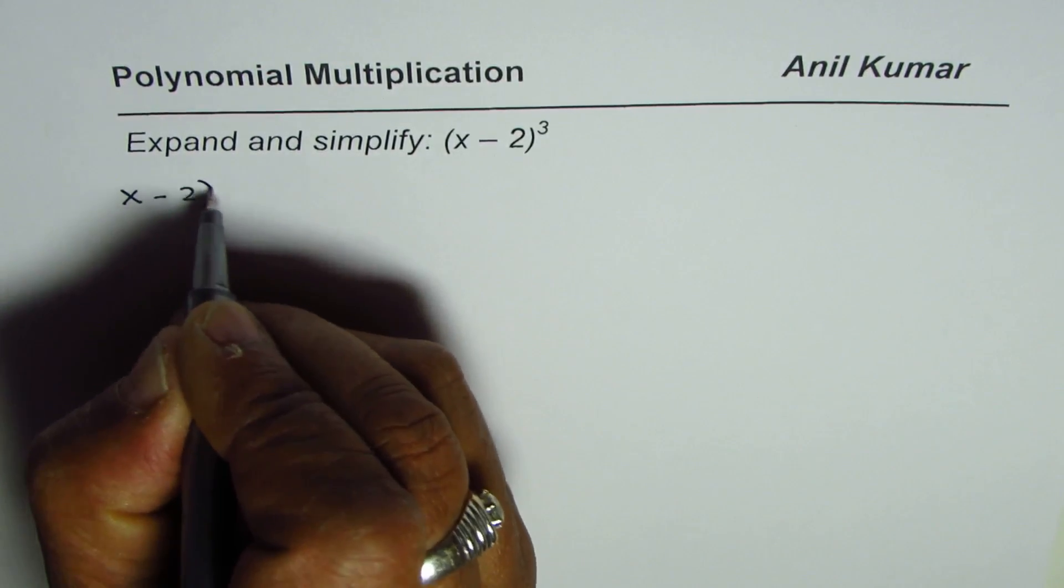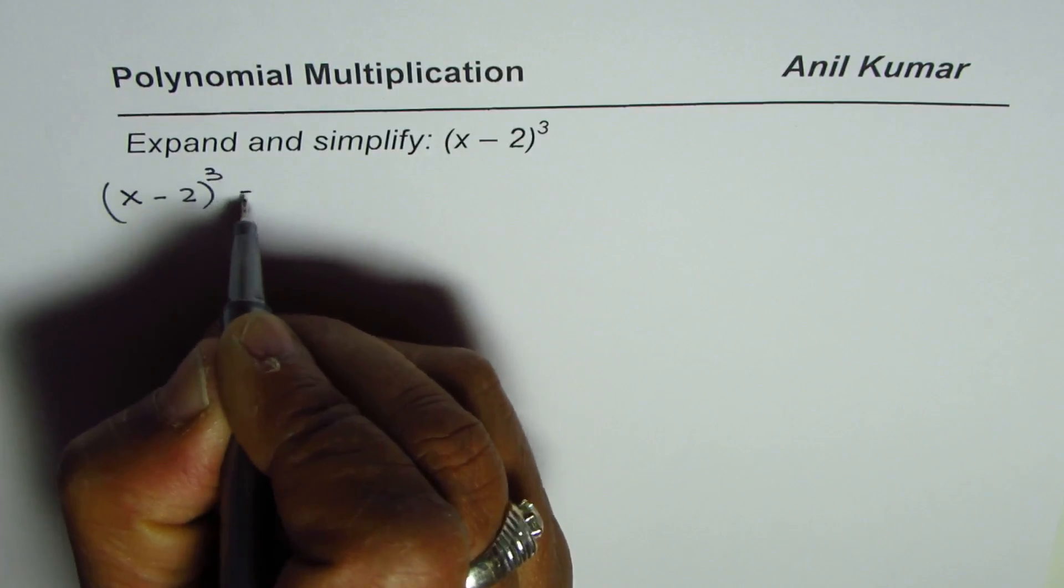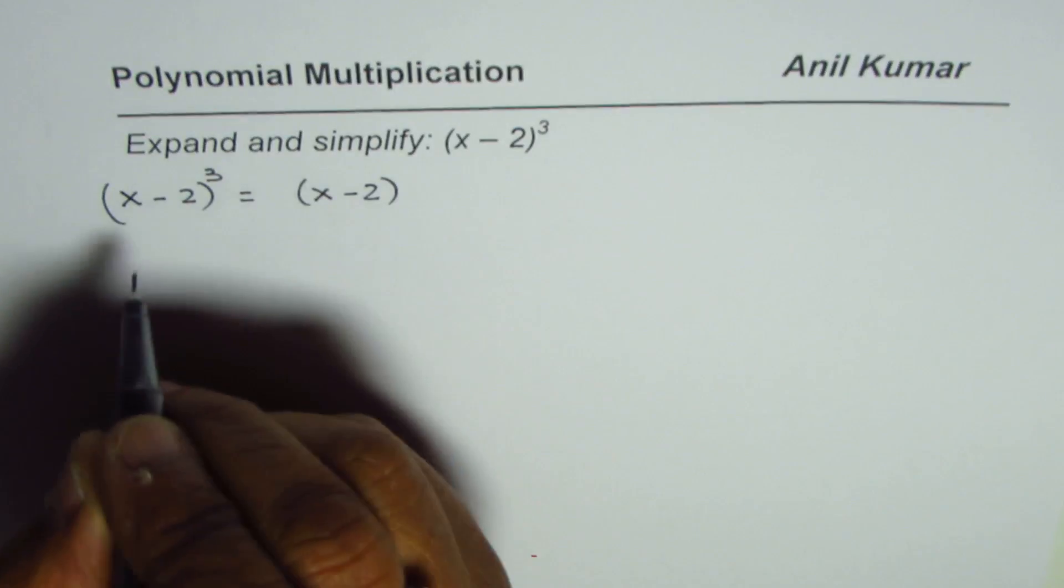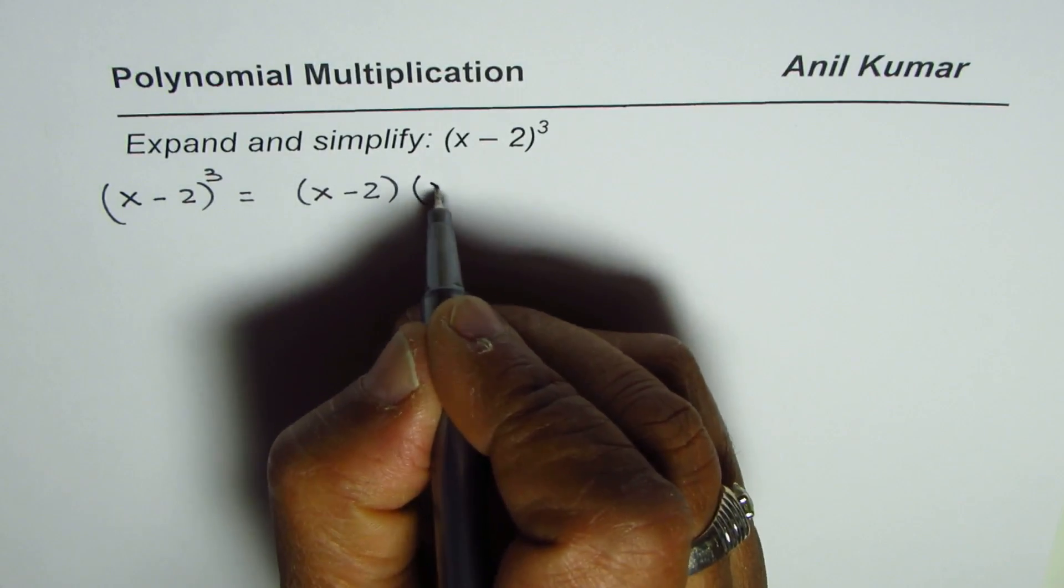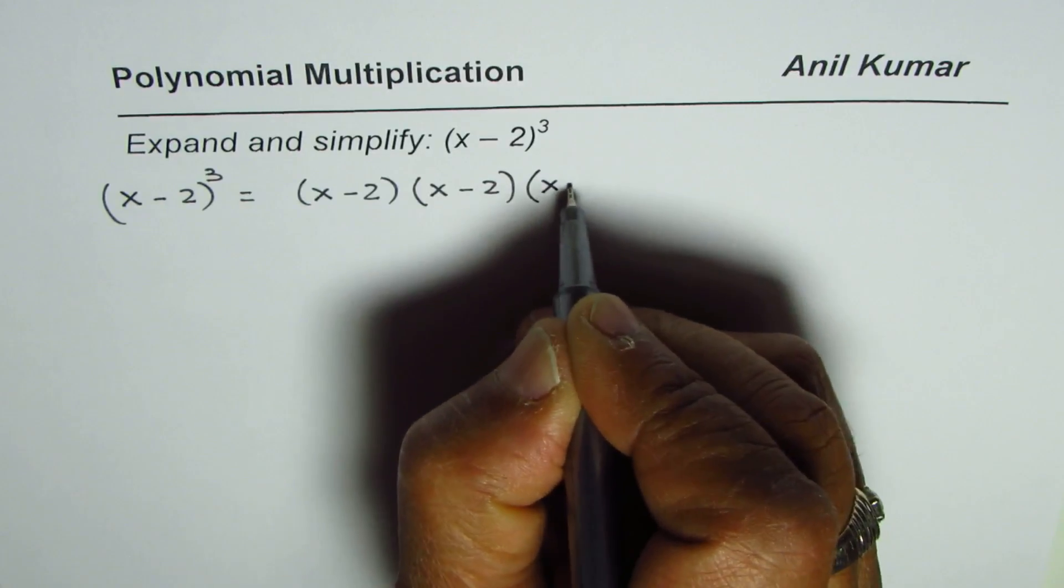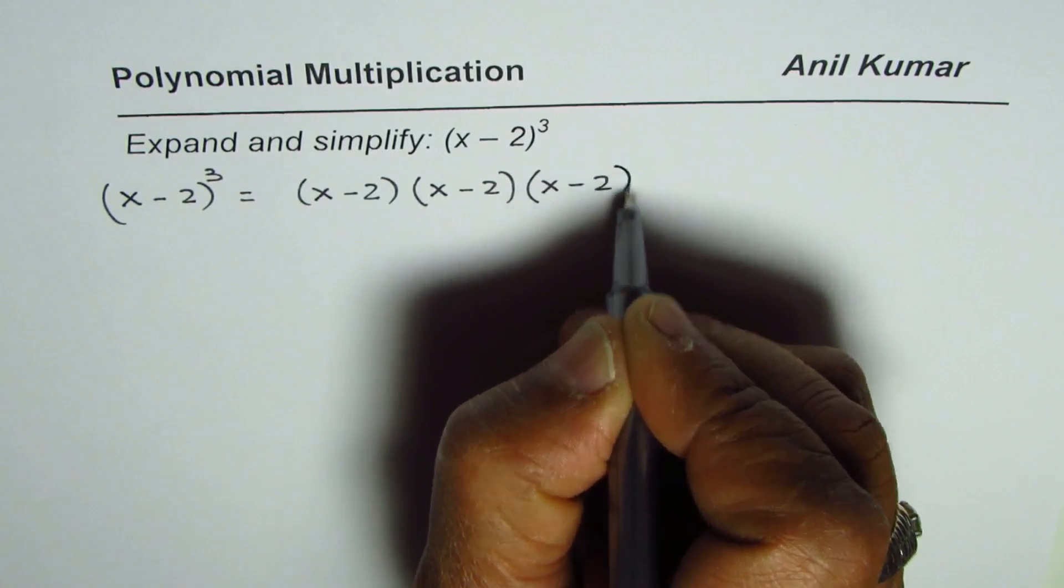So x minus 2 whole cube could be written as x minus 2, that is the binomial, multiplied to itself three times. This is what is the meaning of x minus 2 whole cube.